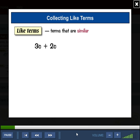Well, say you've got 3c plus 2c. These are like terms because they're both a number multiplied by c, or c terms. You can collect them or add them together, and they become 5c.